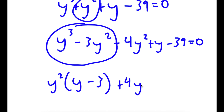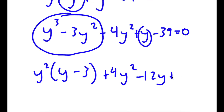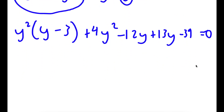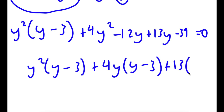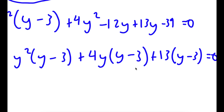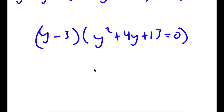I'm going to add 4y squared and rewrite y as negative 12y plus 13y. So from y squared times y minus 3, plus from 4y squared minus 12y I can factor out 4y giving 4y times y minus 3, plus 13 times y minus 3, all equal to 0. Factoring out y minus 3, I get y minus 3 times y squared plus 4y plus 13 equals 0.